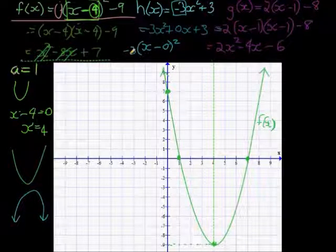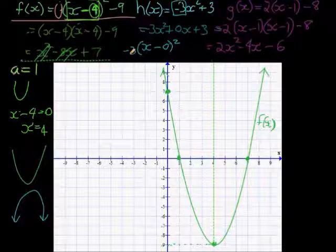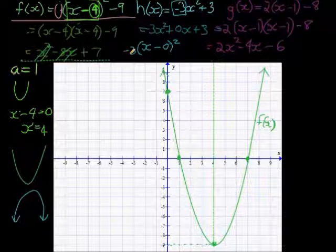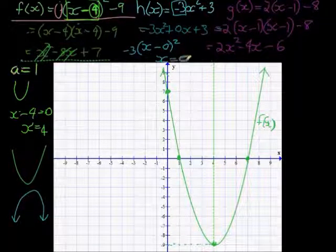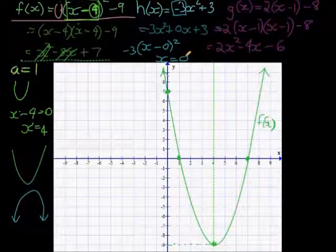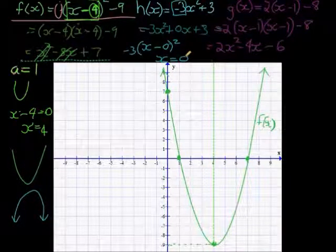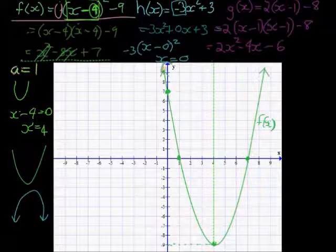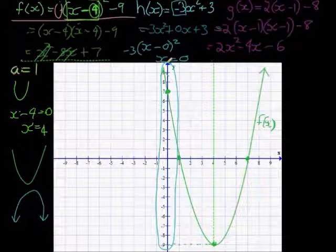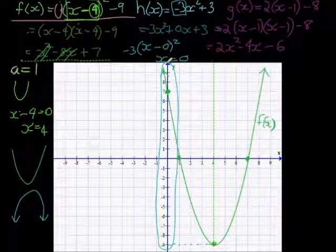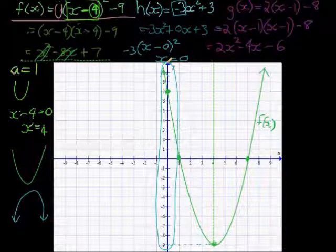And since x minus 0 is just x, it became just x squared. Now since that is the case, it means that the symmetry line is x equals 0. Where is that line? Well, it is appropriate that it's written there, because that line is the y-axis. The y-axis is the line x equals 0, because everywhere on the y-axis, x is equal to 0.